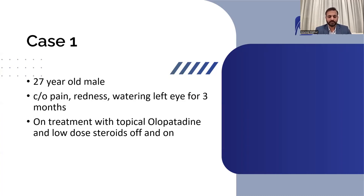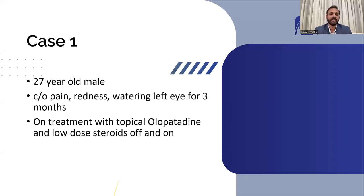I am going to discuss a few cases with you, showing pictures and videos where the patient appears to be a simple case of conjunctivitis but is actually something else. My first case: a 27-year-old male who presented with complaints of pain, redness, and watering in the left eye for three months. The right eye was essentially asymptomatic or showing very mild congestion; it was the left eye showing congestion, redness, and watering. The patient was already on treatment with topical olopatadine and corticosteroids off and on.